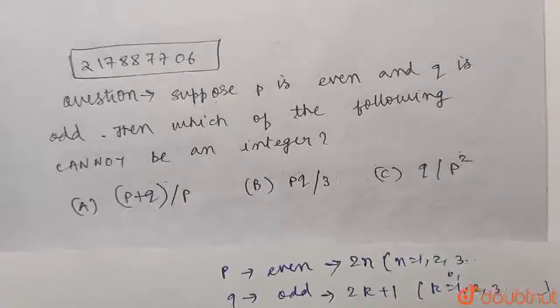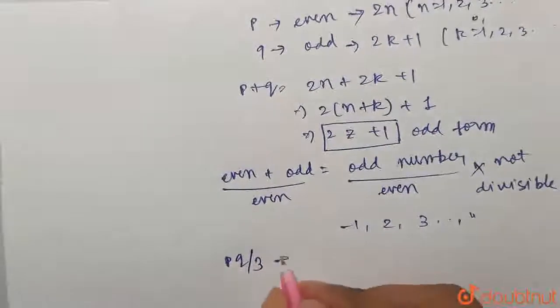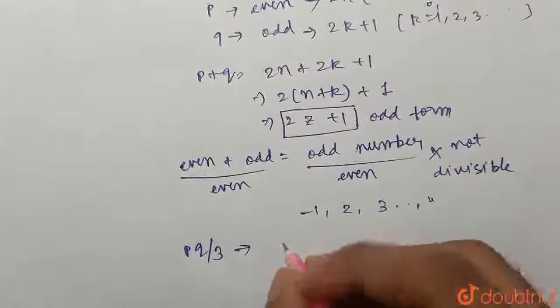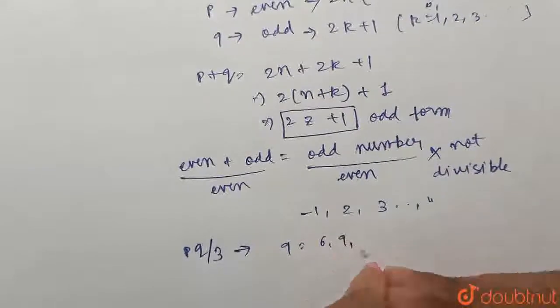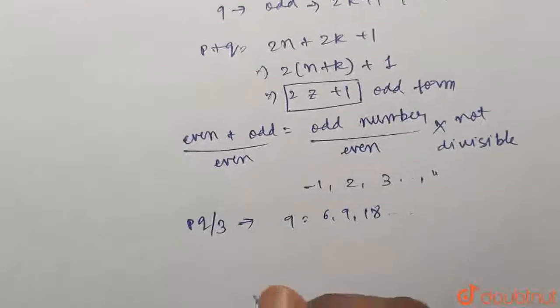So let us move on to the second option. PQ divided by 3. Now guys, if Q is, let us say 6 or 9 or 18, anything that is divisible by 3, then obviously this can be an integer.